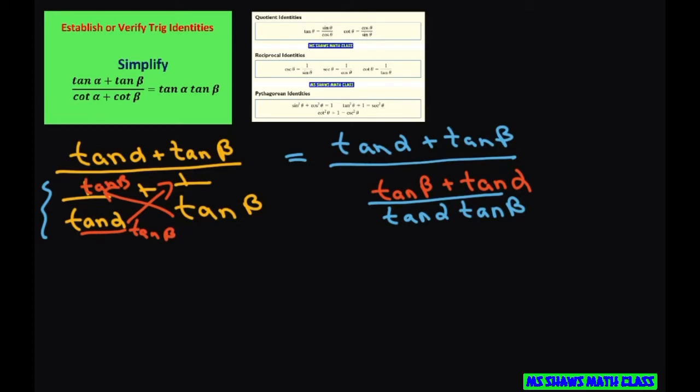Now we're going to divide this. So we have A divided by B divided by C. This is A, B, and C. So we can write this as A, keep, change, flip.